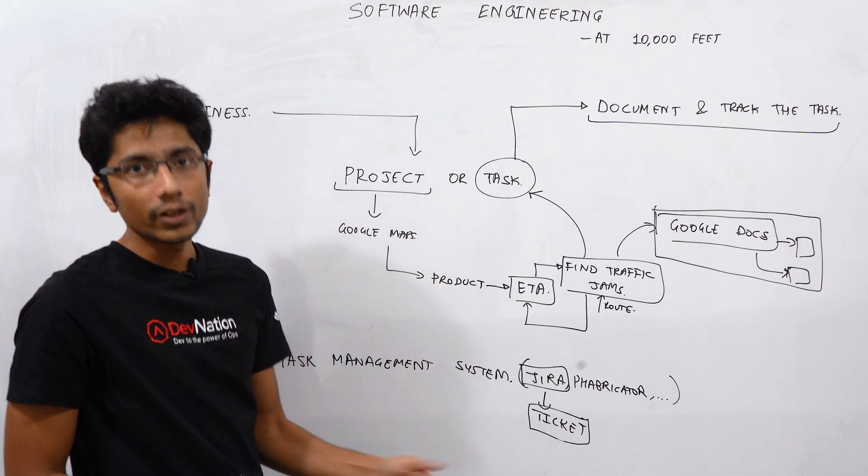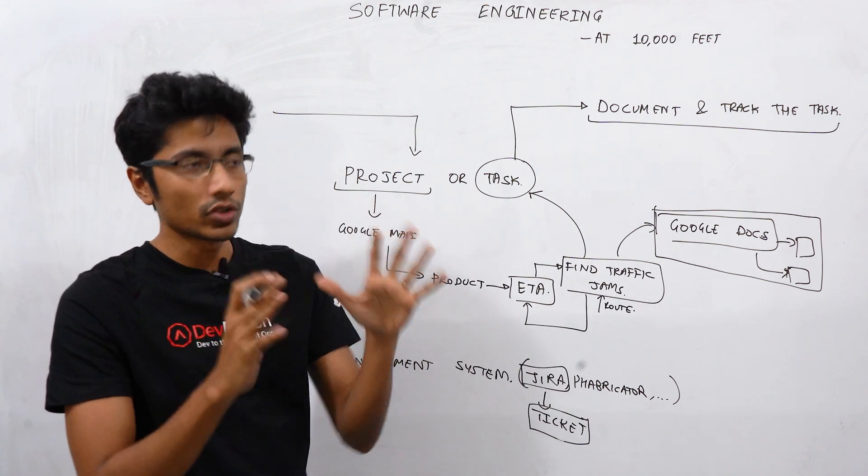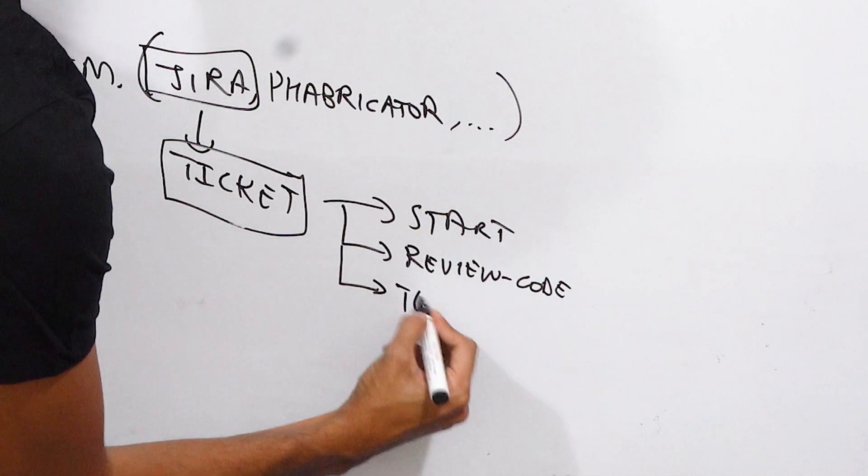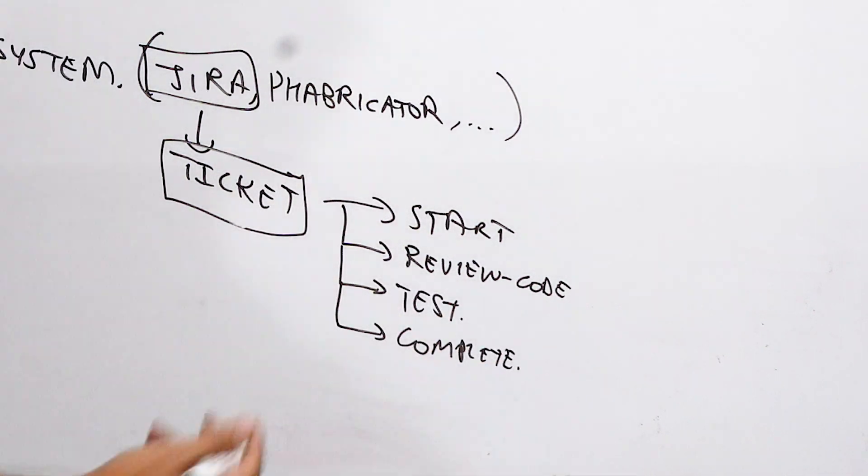So when you're ready to work on the ticket you mark it as started and then you start actually thinking about the code or any kind of design that you need to do for this. Eventually the ticket will be marked as complete. Before that you might have certain stages like I'm testing the ticket so that's one stage.